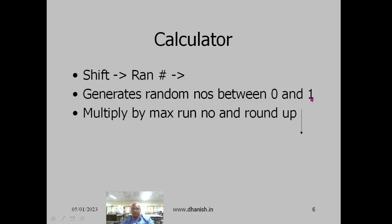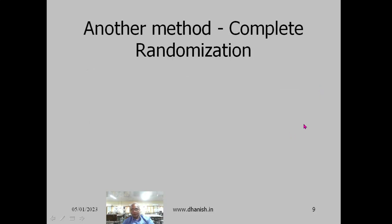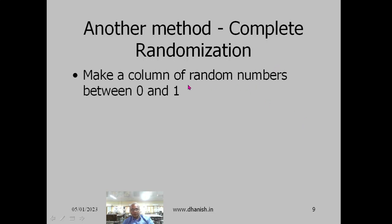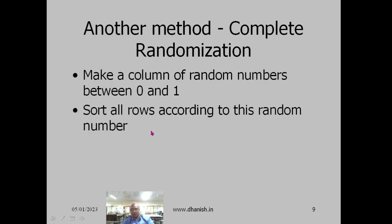If you are using random numbers between 0 and 1, multiply the random number by the maximum run number and then round up to get the last number. Another method is to make a column of random numbers between 0 and 1 and sort all rows according to that random number. In Excel, fill the column with random numbers and sort the table using the sort command.